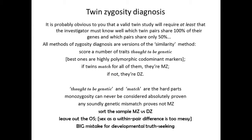All methods of zygosity diagnosis are versions of the similarity method. Siemens' real biggest contribution was the polysymptomatic similarity diagnosis method. The whole idea—still true with molecular markers—is that you score a number of traits thought to be genetic. The best ones are highly polymorphic codominant markers, meaning sequences of DNA that are very different amongst members of the population, coming in many different versions. Polymorphic means many versions; codominant means when you analyze them you see each different version, with no one version overriding another.